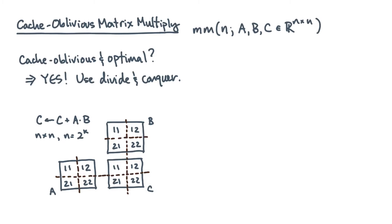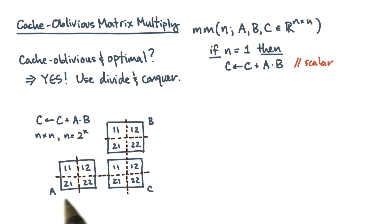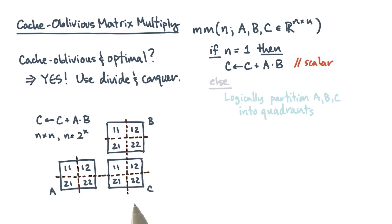The base case occurs when a, b, and c are scalars — the algorithm just performs a scalar update. Otherwise, the input matrices are logically partitioned into quadrants as shown in the figure, and the algorithm performs eight recursive matrix multiplies to update the four quadrants of C.